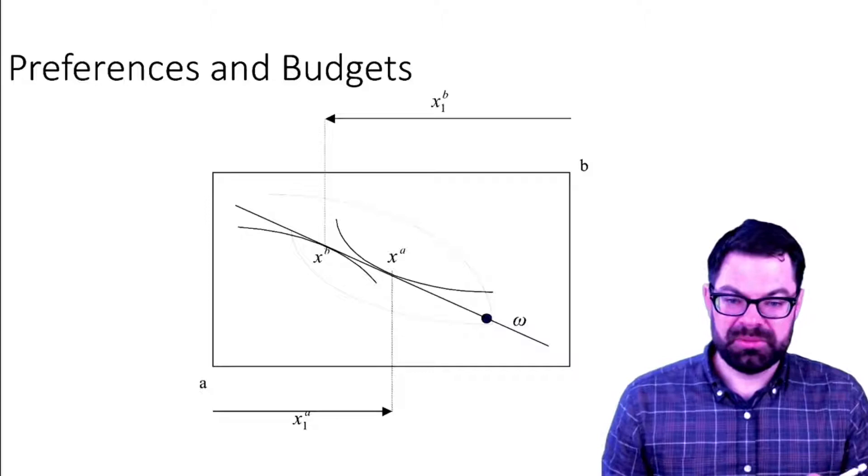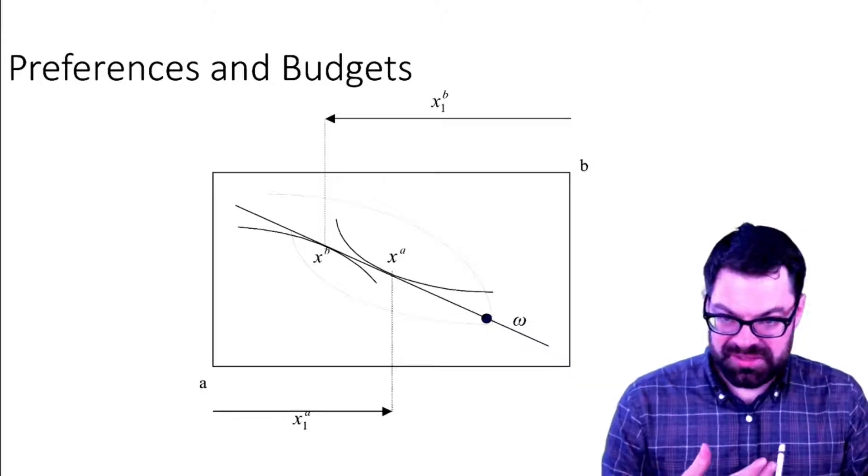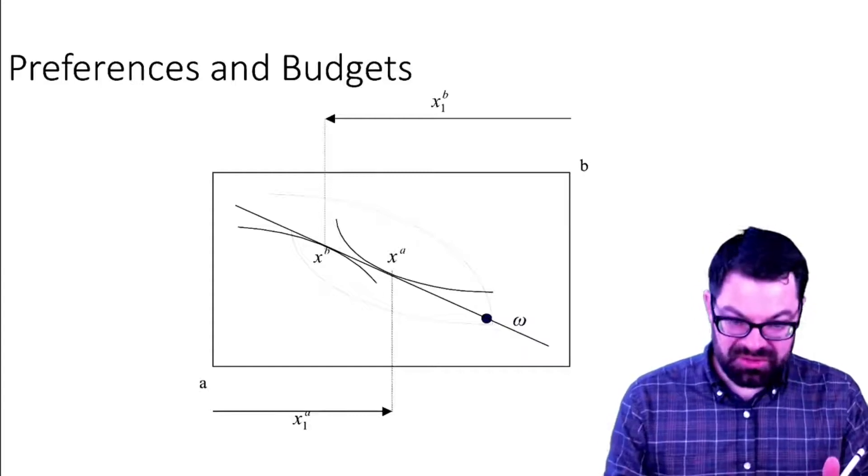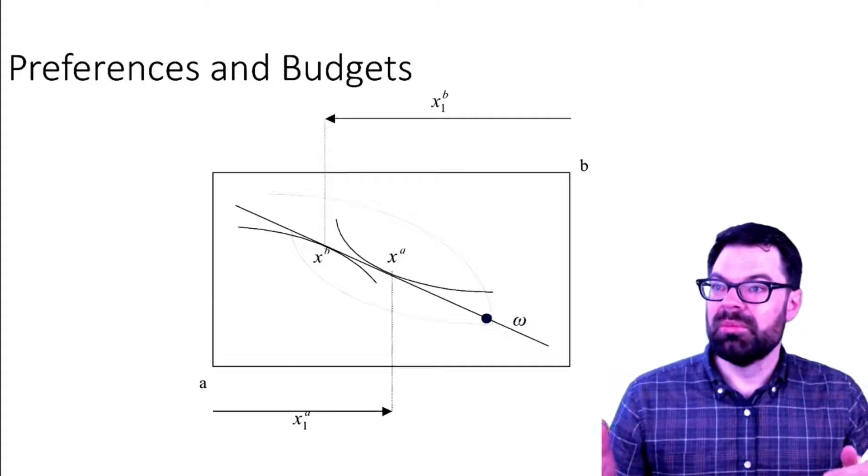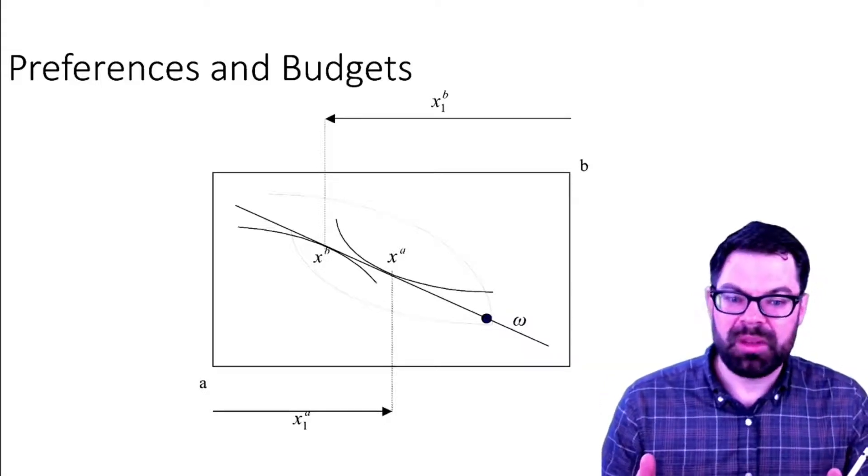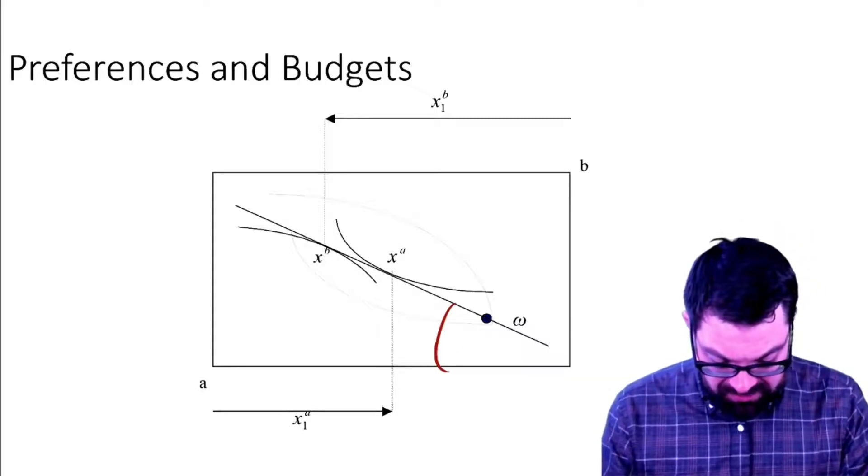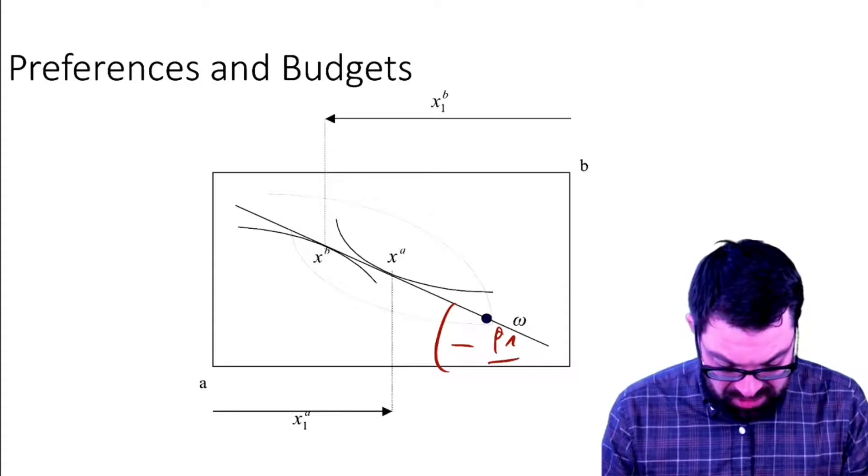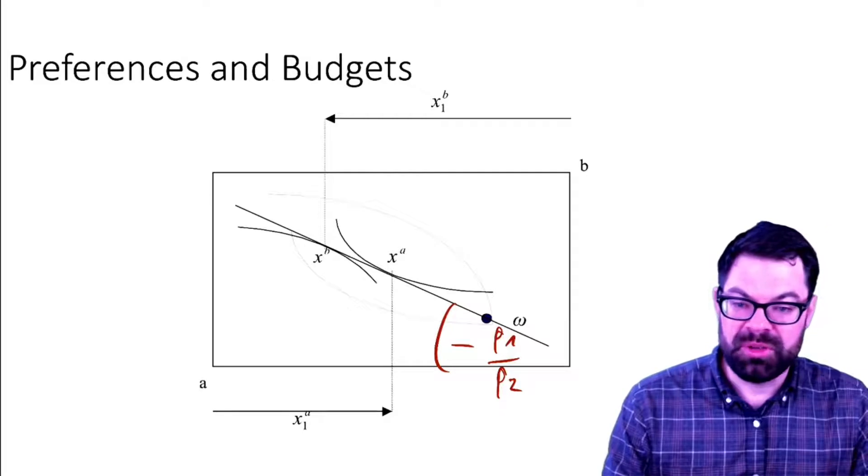We also derived what the budget constraint looks like. The budget constraint has to go through the endowment point because no one can consume more than what the value of their endowment is, and the slope of that budget constraint is the ratio of the two prices, minus p1 over p2.